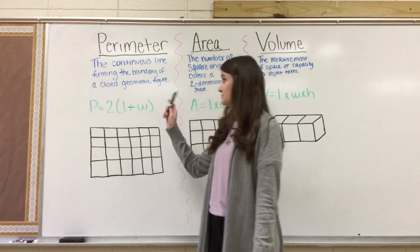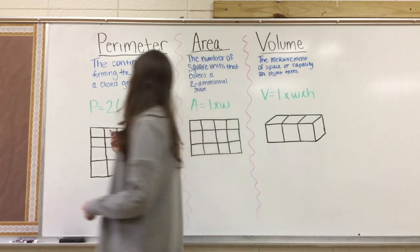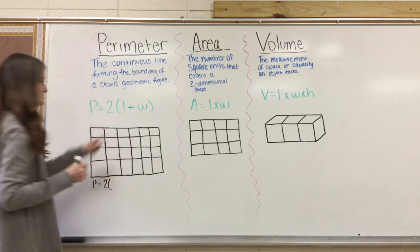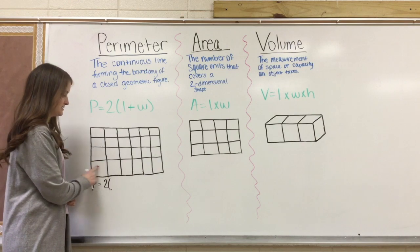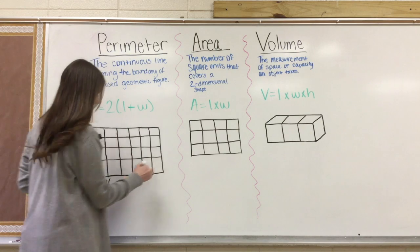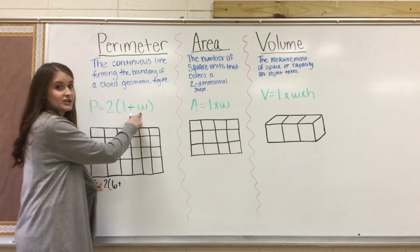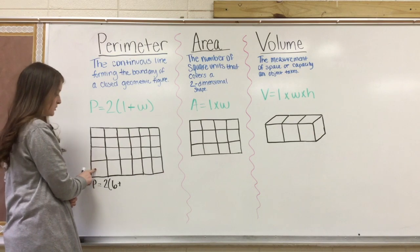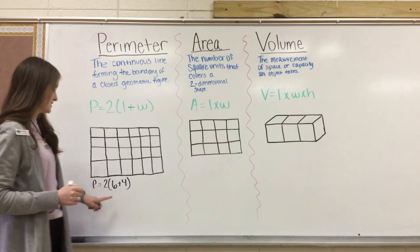We're going to practice perimeter using this shape and the formula that we just went over. So first, P equals 2, and L stands for length. So we're going to count the length: 1, 2, 3, 4, 5, 6. So in parentheses I'll put 6 plus then the width. So we're going to calculate the width: 1, 2, 3, 4. So that's 4.